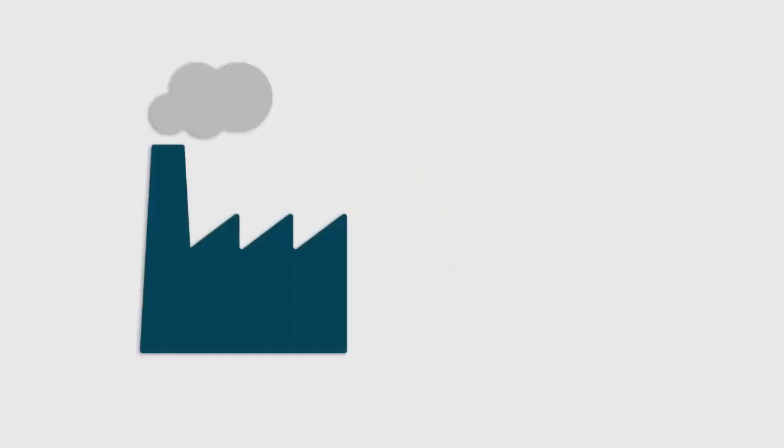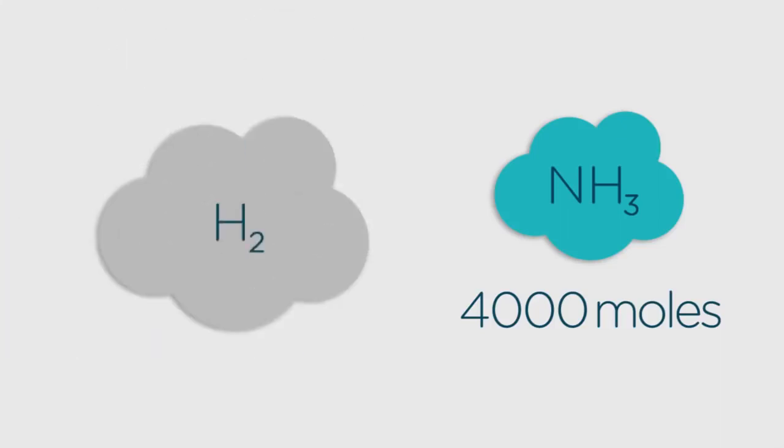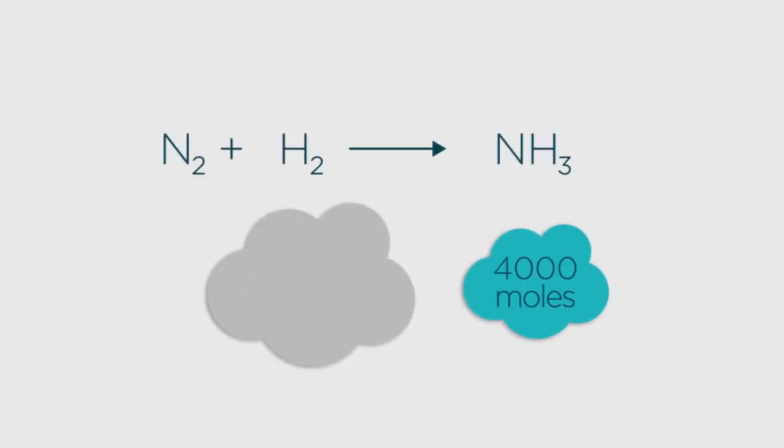Imagine one day at the chemical plant we produced 4,000 moles of ammonia with an excess of hydrogen gas. Whenever you see a reactant being described as in excess, that means there is more of it in the reaction vessel than is needed.